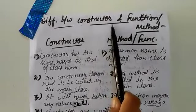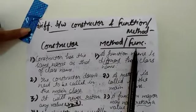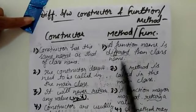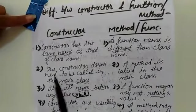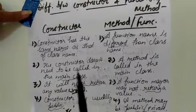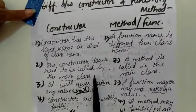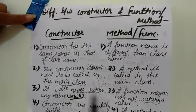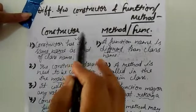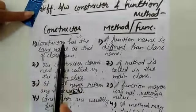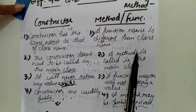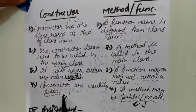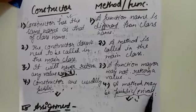Now the basic difference between constructors and functions: First, a constructor has the same name as the class name, but a function name must be different from the class name. Second, a constructor does not need to be called in the main function — we create an object and it is called automatically — whereas a method is explicitly called in the main class. Third, a constructor never returns any value, not even void, whereas a function may or may not return a value. Finally, constructors are usually public unless the user defines them otherwise, whereas functions can be public or private.